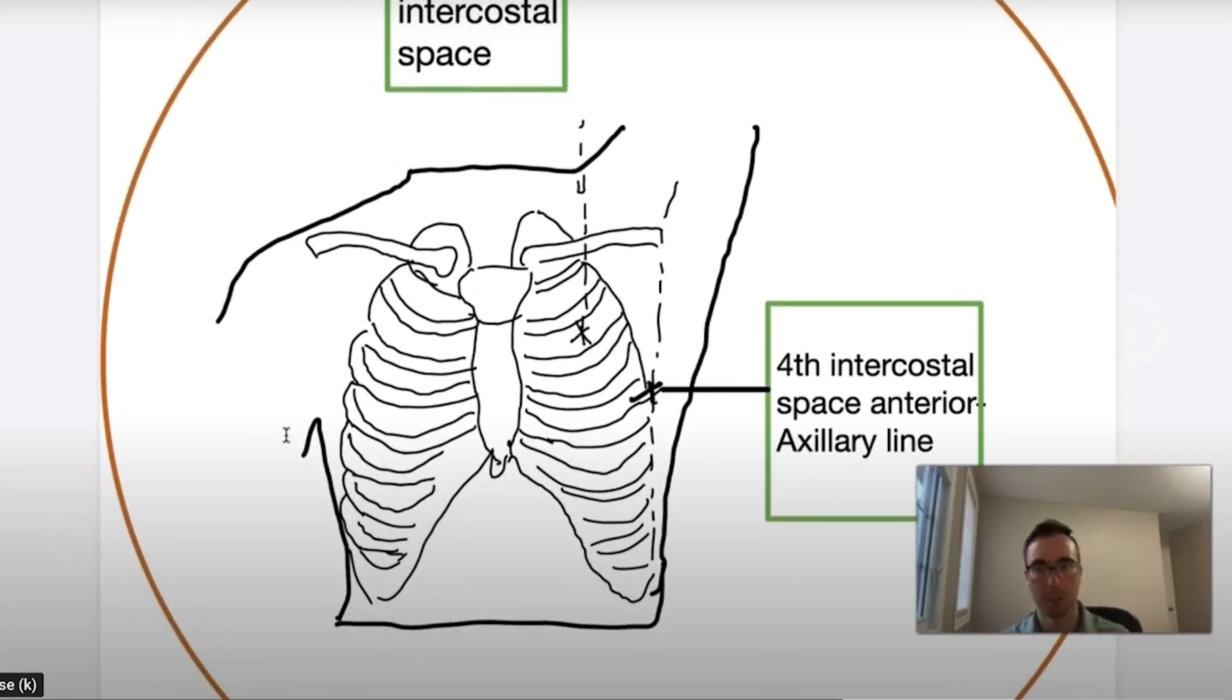However, pediatrics is different. For our catchment area, we just want one preferred site, which is the fourth intercostal anterior axillary site. And anyone that's 13 years and older should get the 12 gauge or 14 gauge needle. And under 13, you can use a 14 gauge or 16 gauge needle.